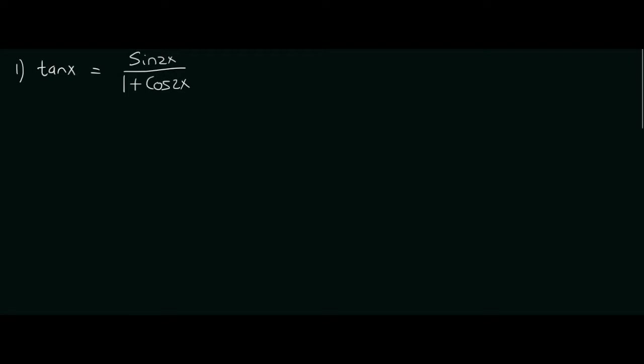With identities you typically want to start with the more complicated looking side, and that is obviously the right-hand side of this expression. Now we can see that we have a sin 2x and a cos 2x, so let's just quickly get the formula sheet.